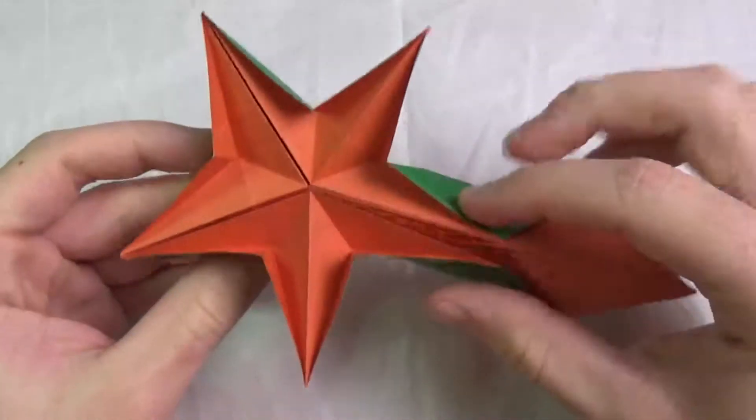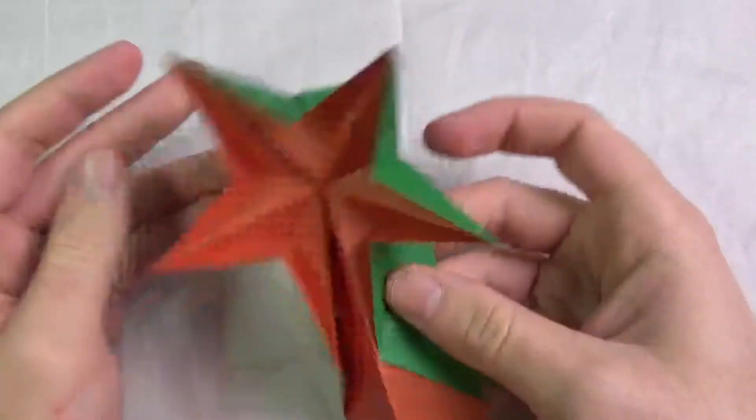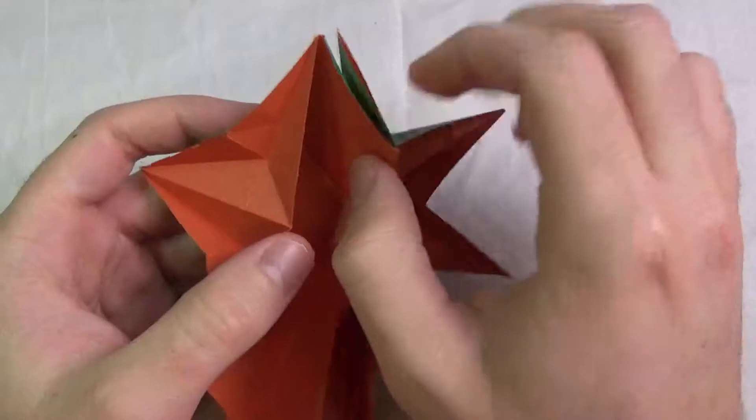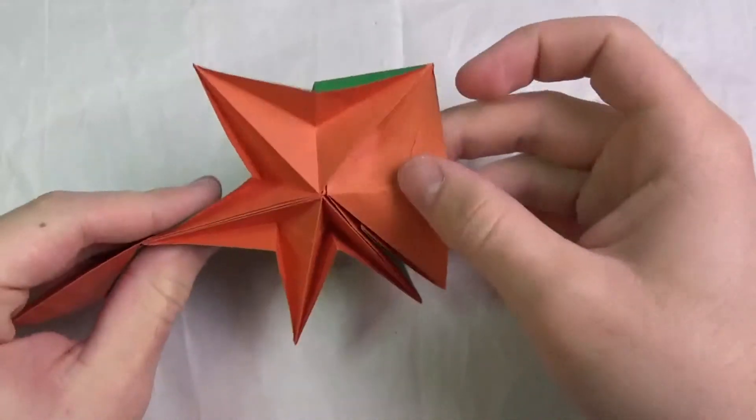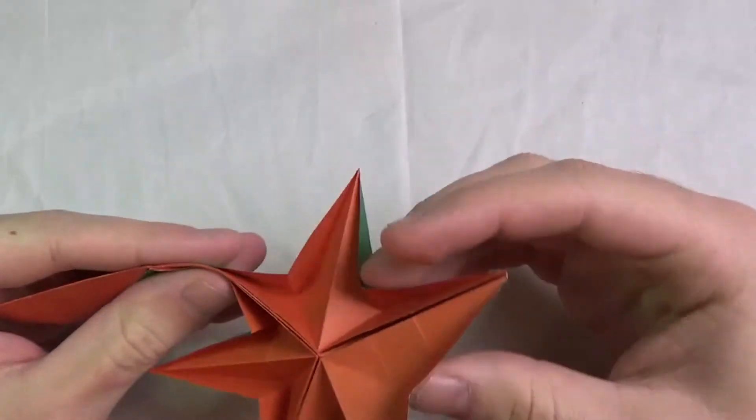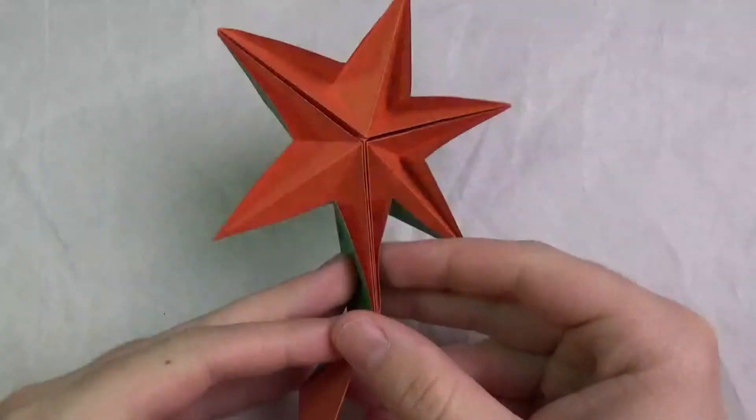It's a five-pointed star now. And you can turn it back into the six-pointed star by releasing the flap inside. And then we're gonna make those folds. And now we're back to the six-pointed star. Isn't that cool?